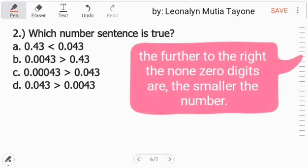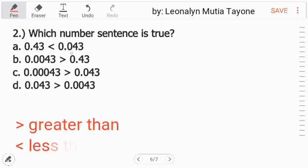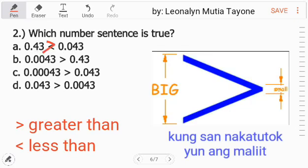Question number two: which number sentence is true? Remember this: the farther to the right the non-zero digits are, the smaller the number. Tignan natin yung choice A: 0.43 is less than 0.043? No, it's more than, kasi mas malayo na yung non-zero nya, nasa four, so mas maliit yung 0.043 kaysa dito. Next, 0.002, dalawang zero, ang layo from decimal kaysa dito, so ito mas malaki ito kaysa dito, so it's less than, mali rin.